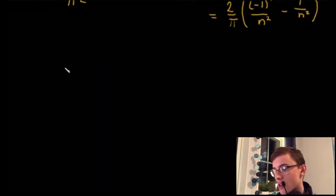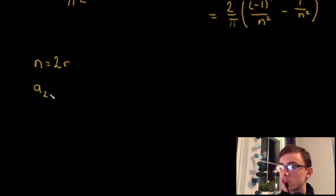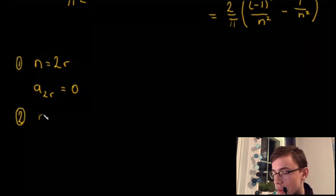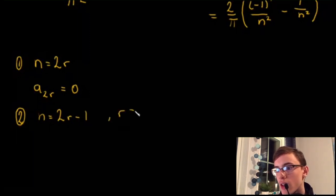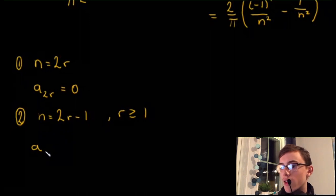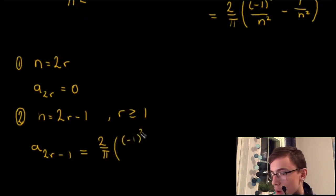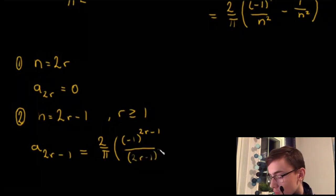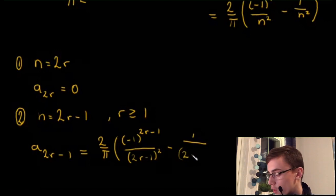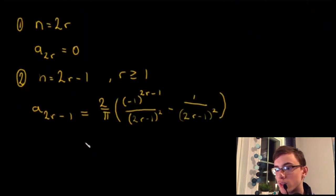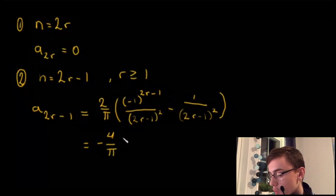We now have two cases. When n = 2r (even), a₂ᵣ equals 0, because the two terms cancel. When n = 2r−1 (odd), for r ≥ 1, a₂ᵣ₋₁ equals 2/π times [(-1)^(2r−1)/(2r−1)² minus 1/(2r−1)²]. Since (-1)^(2r−1) = −1, this equals −4/π times 1/(2r−1)².